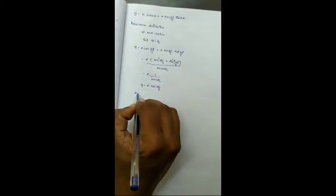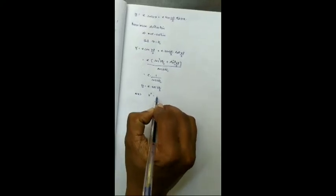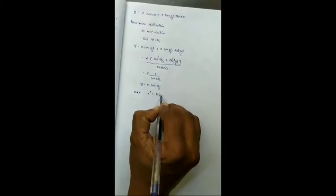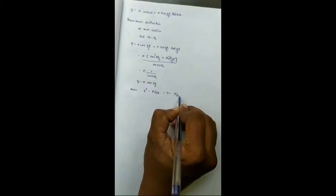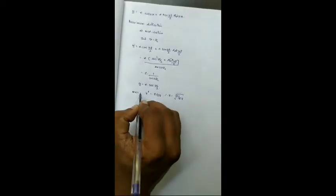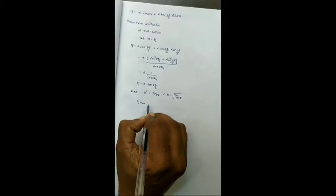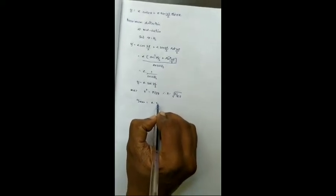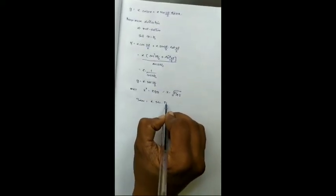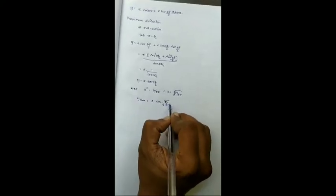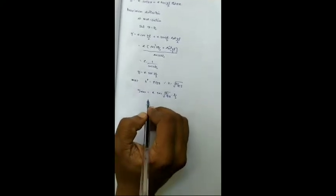Right, we already know k square is equal to P by EI, therefore k will be equal to root P by EI. We substitute and you will get the final value y max is equal to e secant root P by EI into L by 2.